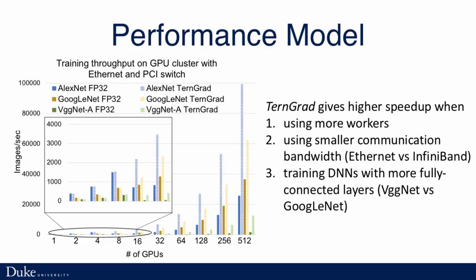Finally, we propose a performance model to estimate the speedup of TernGrad. In the figure, solid bars are for standard SGD and shaded bars are for TernGrad. TernGrad can always give a good speedup. When the communication over computation ratio is larger, TernGrad should give a better speedup — for example, if we have more workers to communicate with, or if we use a lower speed ethernet. TernGrad can also give better speedup for networks with more fully connected layers, like VGGNet versus GoogleNet.